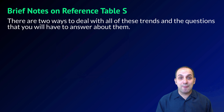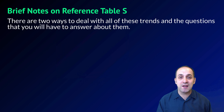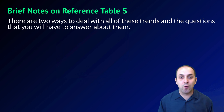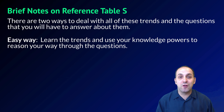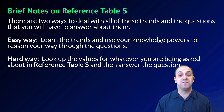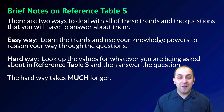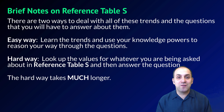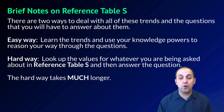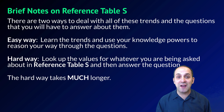Reference table S lists electronegativities, ionization energies, and atomic radii for any elements you need at the regents level. There are two ways to approach periodic trends questions: the easy way is to learn the trends and use that knowledge to reason through questions; the hard way is to look up values in reference table S. The hard way takes much longer and you're more likely to make mistakes, but if you blank on the trends during an assessment, you can always look up the actual values to get the answers you need.